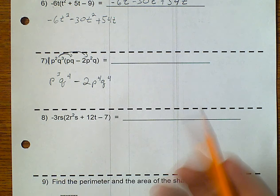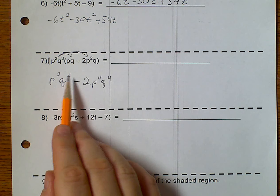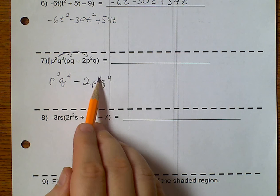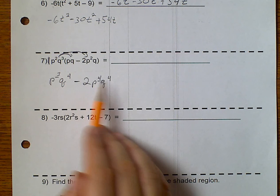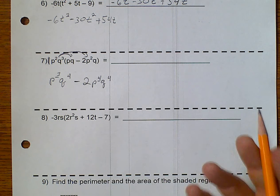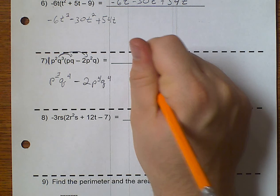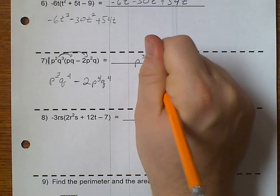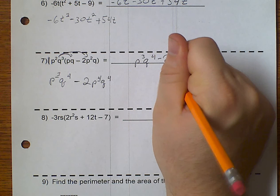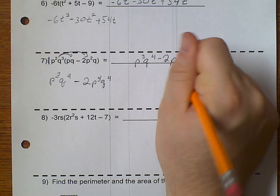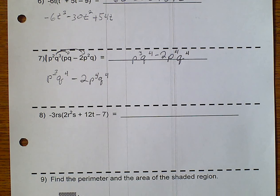And, I look to see, can I combine these? Well, this is p to the 3rd, q to the 4th. This is p to the 4th, q to the 4th. Well, these exponents are not the same. Therefore, I can't do anything with these. And, so my answer remains the same. I can't change it.